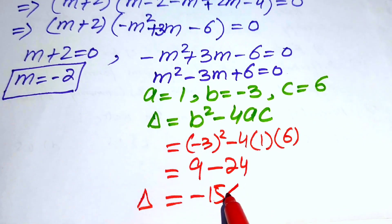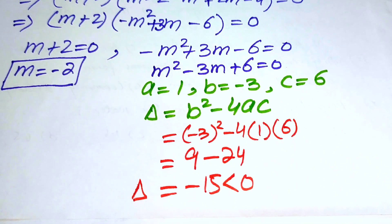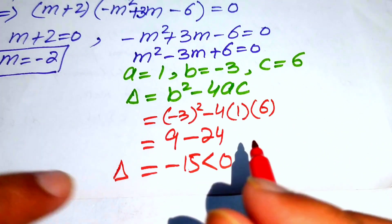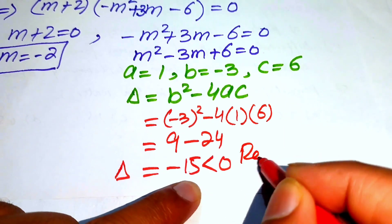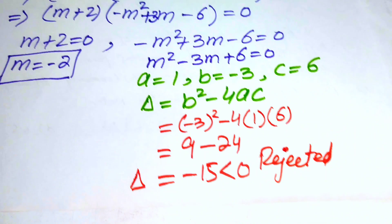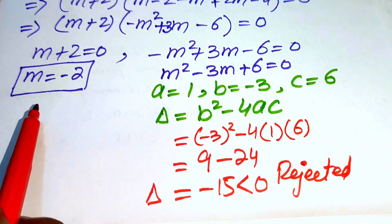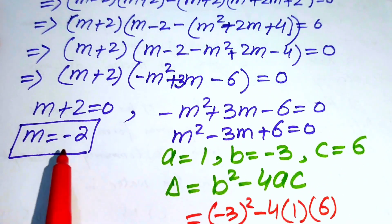Since delta is less than 0, the quadratic has no real roots. We know that if delta is less than 0 there are no real roots, and if delta is greater than or equal to 0 there are real roots. Since we need only real roots, we reject this case.